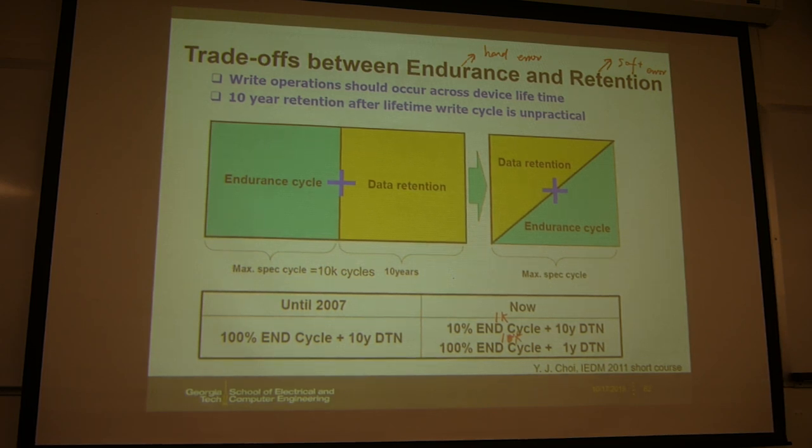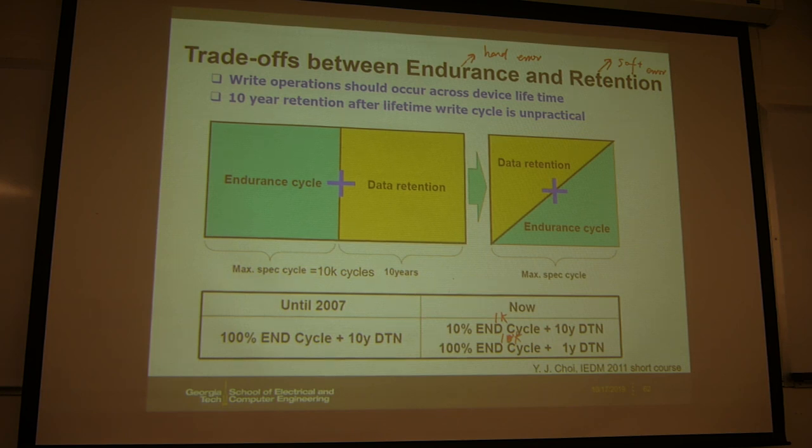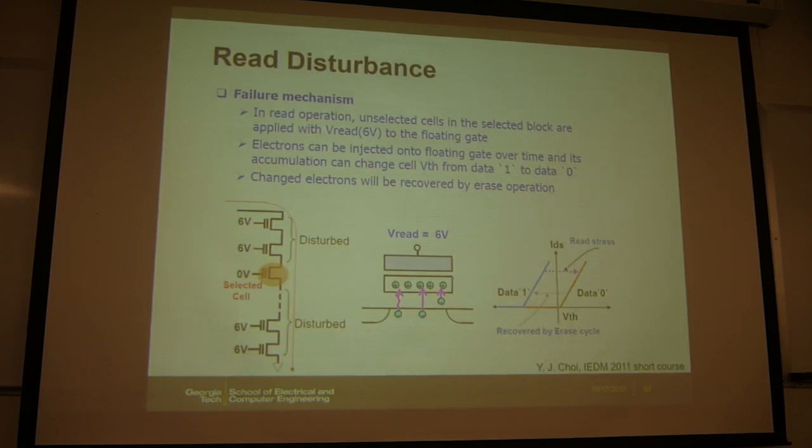But hard error is basically it's dead. Right? You cannot use it anymore. Because for the endurance, if the window of that VTH state closed, then basically you cannot distinguish which is which state. So then you no longer can use it. Then this is hard error. So your ECC should deal with both types of error. Hard error and soft error.